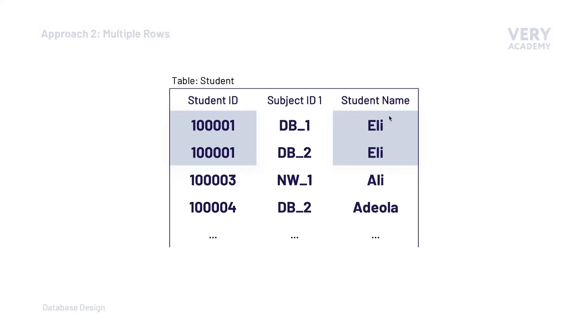This is going to potentially cause update anomalies. Because if we were, for example, to update the name of the student, we would need to make sure that we updated all of the instances of that student. And although we could programmatically create this service or this feature, it is a little bit unnecessary to store multiple or duplicate data potentially in this case. So we want to try and avoid this approach.